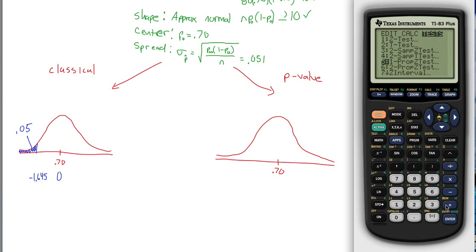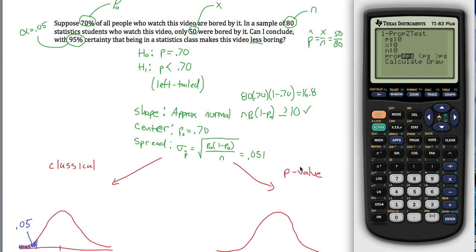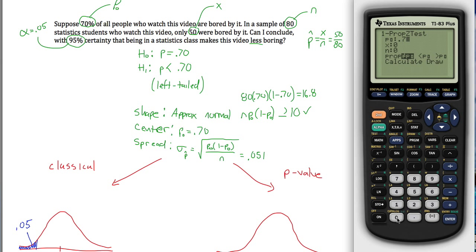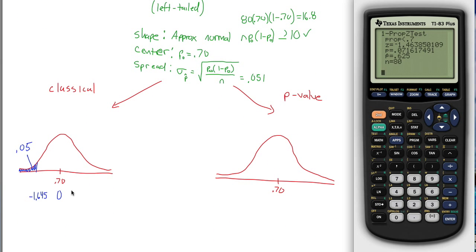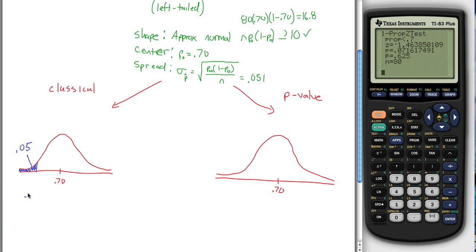And what's nice is my calculator has a function that'll calculate the test statistic for me. It's under tests. It's this fifth guy here, one prop z-test. Prop standing for proportion, one because we only have one proportion. Z-test, proportions are always z-tests, it's because we're only estimating one parameter, p. We're not estimating two parameters, like for example, sigma and mu. Anyways, it's a one prop z-test, and we have all the information. We know that p-naught was 0.70, x was 50, and n was 80. And our alternative hypothesis is that p is less than p-naught. So it's the second guy here. And so now if I hit calculate, I get a test statistic of negative 1.46. I wonder if I can move this over a little bit. I'm just going to slide this over a little bit so I have a little bit more room to write here.